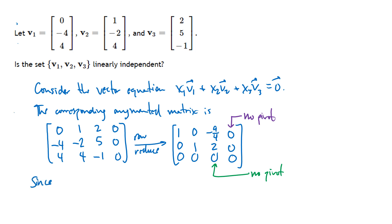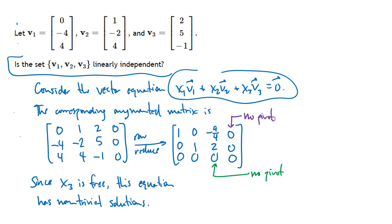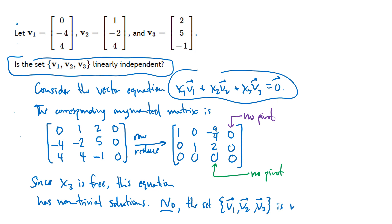Since x3 is free, the equation x1·v1 + x2·v2 + x3·v3 = 0 has non-trivial solutions — solutions beyond just setting all x's to zero. So our answer is: no, the set {v1, v2, v3} is not linearly independent. Equivalently, we could say this set is linearly dependent.